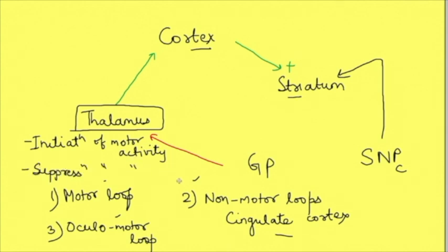The main activity across all basal ganglia loops is to modulate thalamocortical activity — either for initiation or suppression of motor activity. When initiation of motor activity is needed, the inhibitory control of the basal ganglia on the thalamus should be withdrawn so that the thalamus is able to stimulate the cortex. For suppression, this inhibitory control is retained or strengthened so the thalamus cannot excite the cortex.